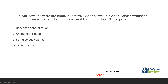Abigail learns to write her name in cursive. She is so proud that she starts writing her name on walls, benches, the floor, and the countertops. This represents what? Compare this to our response generalization question earlier. One of the keys was: what did we teach them, how did it generalize, and was it appropriate?